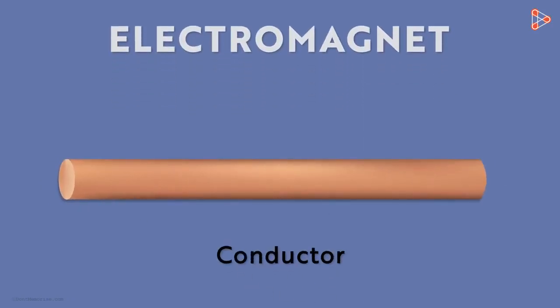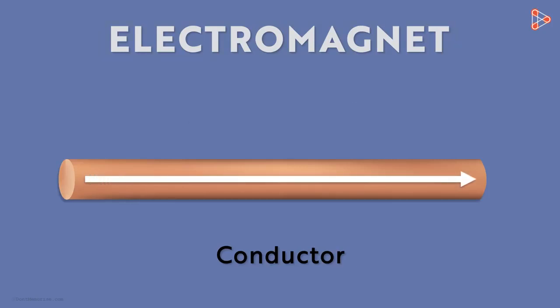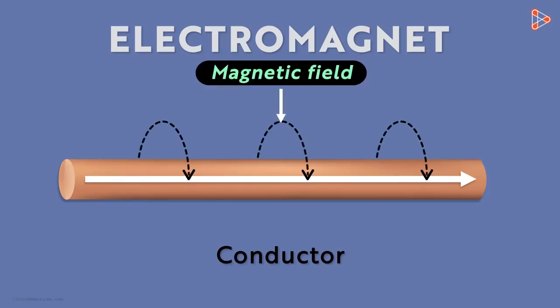In the last video, we saw what an electromagnet is. Any conductor such as a straight wire through which electric current is flowing is an electromagnet.